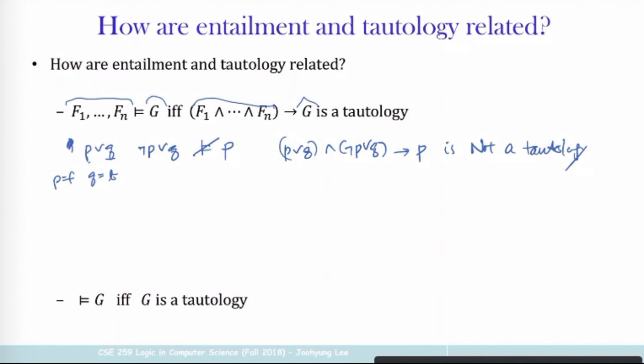A very special case is when the premise is empty. If G is entailed from an empty set of formulas, that means G is a tautology. Some of the examples you did in homework one didn't have all the premises, and you can go back to those formulas and check that each of them is a tautology by drawing the truth table — the formulas you proved in natural deduction from the empty set of premises are tautologies.